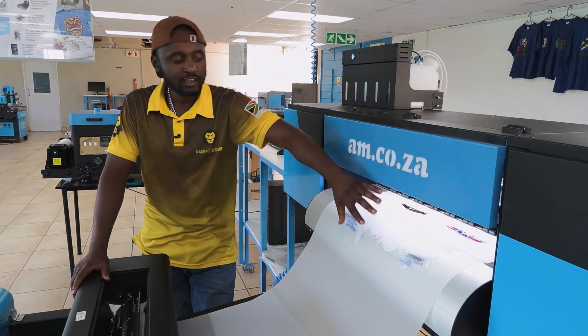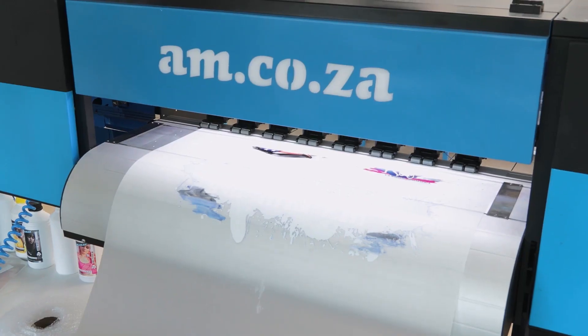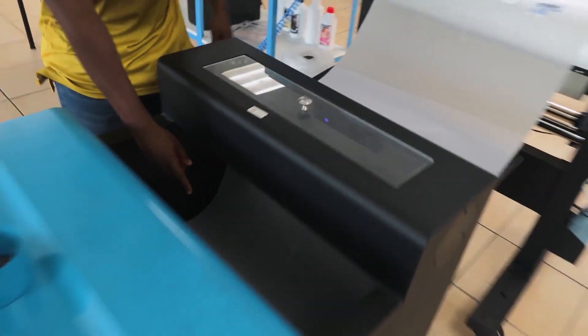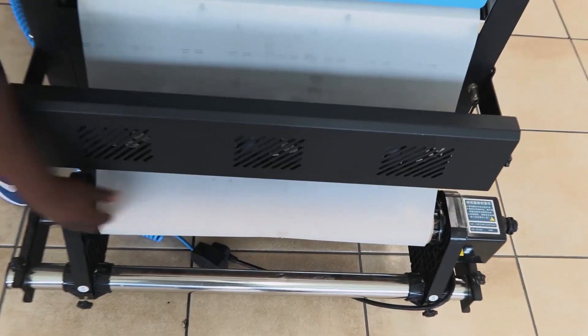And once your print is done this is what happens, so as you send more prints the film goes through all the way until it reaches your take-up roller. And what happens in between is what we're about to get to now, so let's get to the control unit.